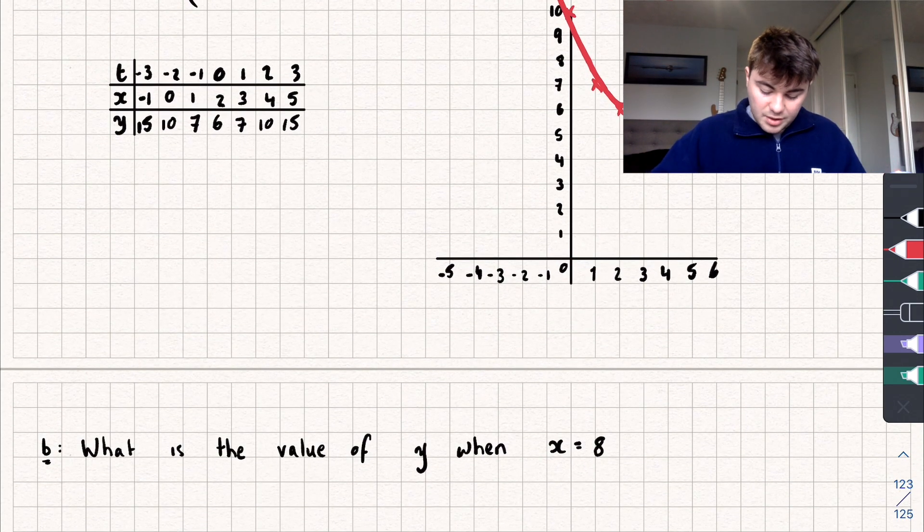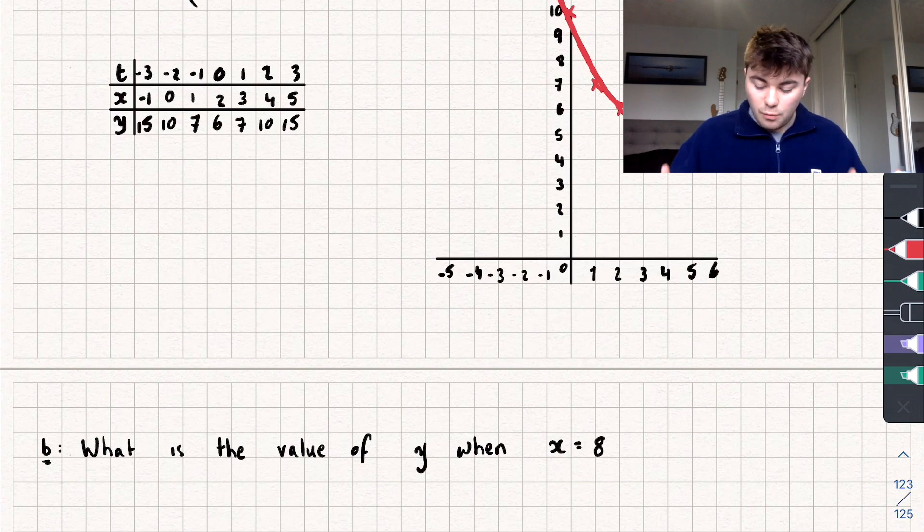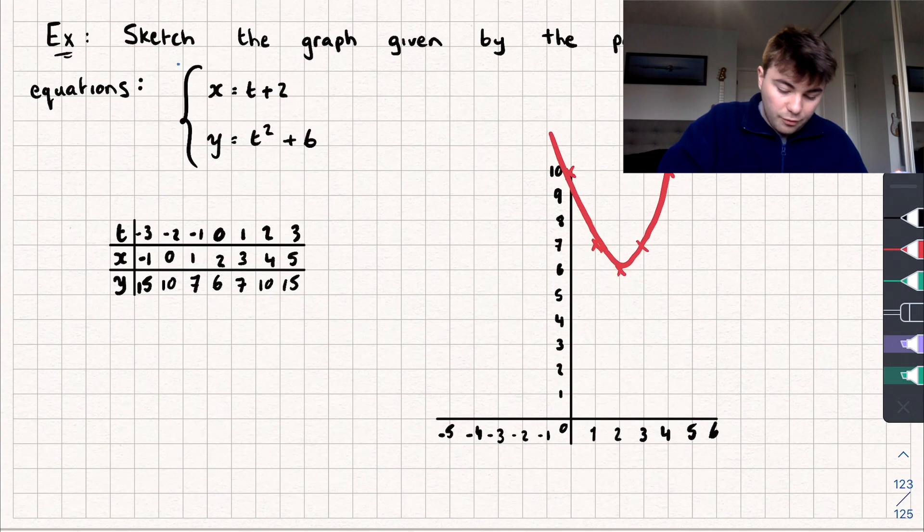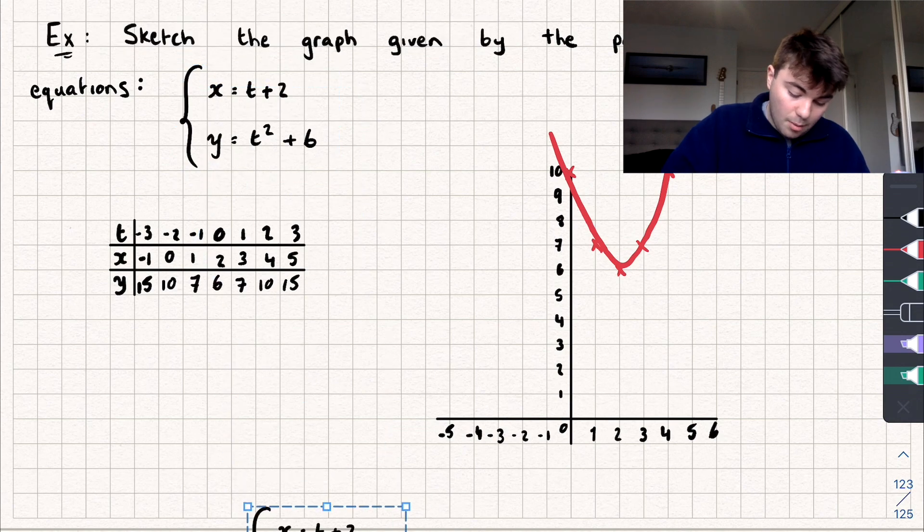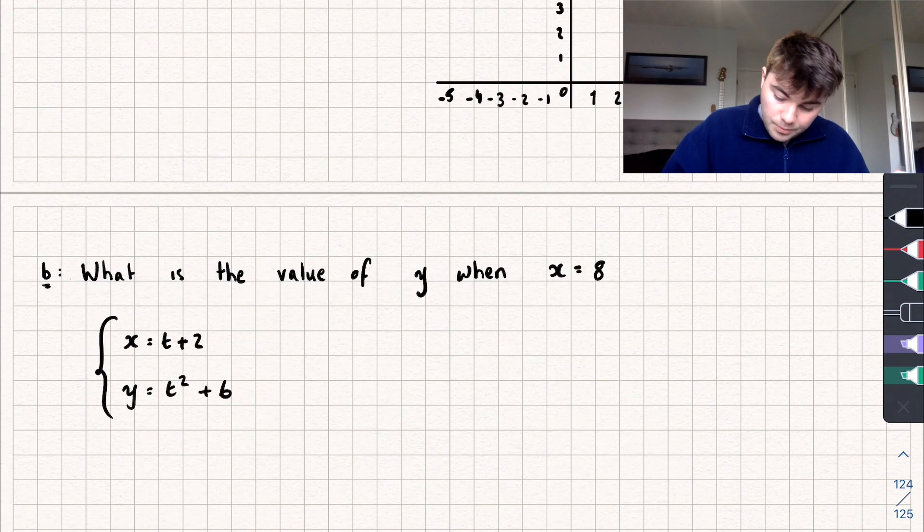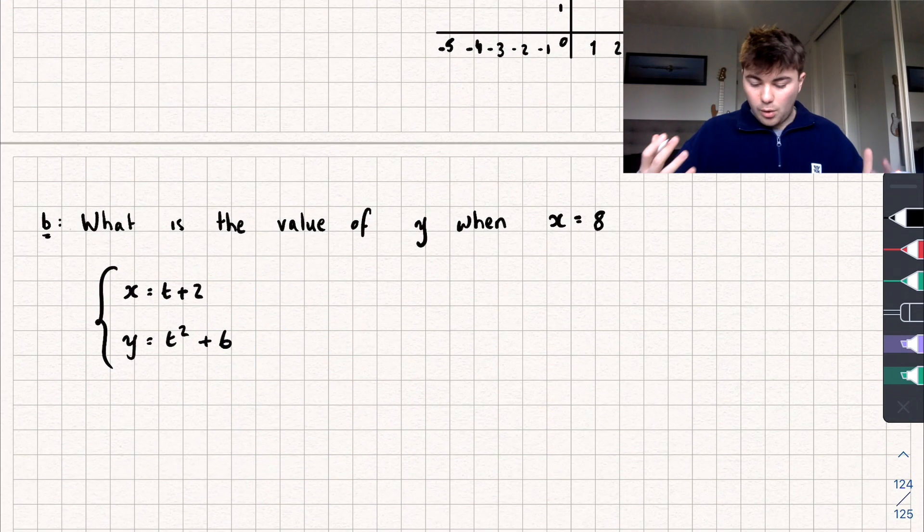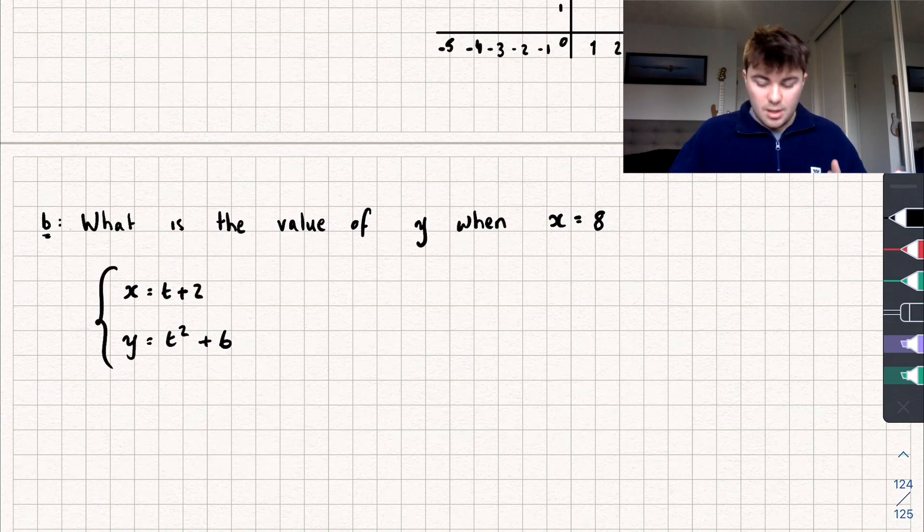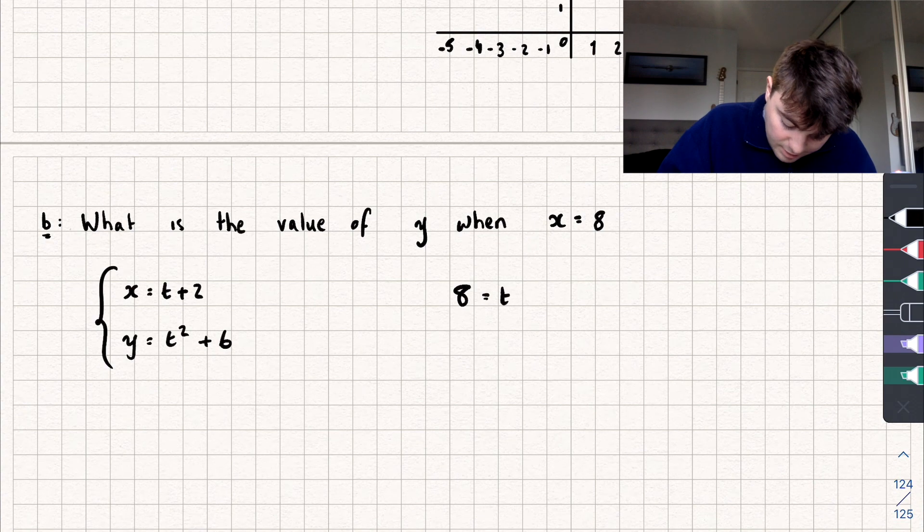So the second part of this question asks, what is the value of y when x is equal to 8? Well, firstly I'm going to bring down the pair of parametric equations. When x equals 8, we substitute that into our top equation, so we've got 8 equals t plus 2, which gives us that t at that point is equal to 6.